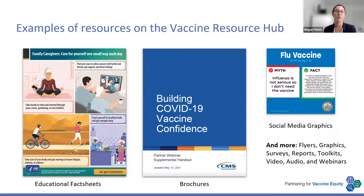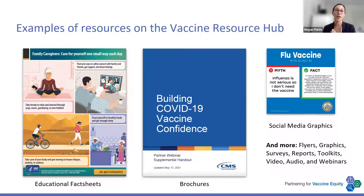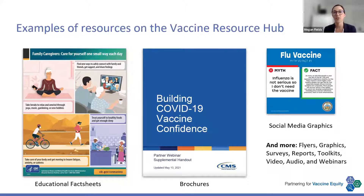Here are just a few examples of assets and resources currently on the Vaccine Resource Hub. The first is an educational fact sheet developed by the CDC, shared there as a one-stop shop for all the different partners across the Partnering for Vaccine Equity Program. There's also a brochure example, and social media graphics you can download and share on your own social media pages. We have flyers, graphics, webinars, and other social media content. Now I'm going to pass it over to Bill, our account director from Insomniac Design, to walk us through the process from a user perspective.